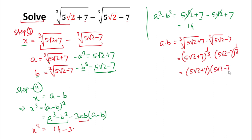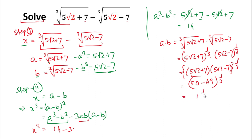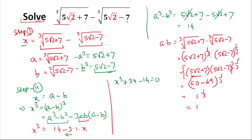The base (5√2 + 7)(5√2 − 7) is in the form (a + b)(a − b) = a² − b². So we get (5√2)² − 7² = 25·2 − 49 = 50 − 49 = 1, raised to the power 1/3. So ab = 1. Since a − b = x, we substitute: x³ = 14 − 3·1·x, giving x³ + 3x − 14 = 0.